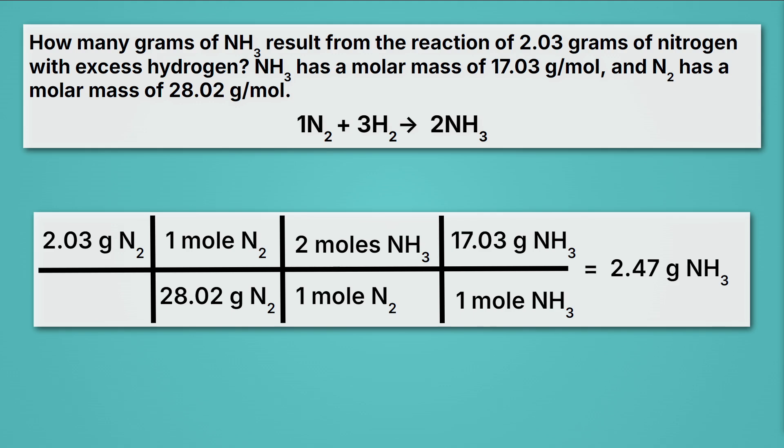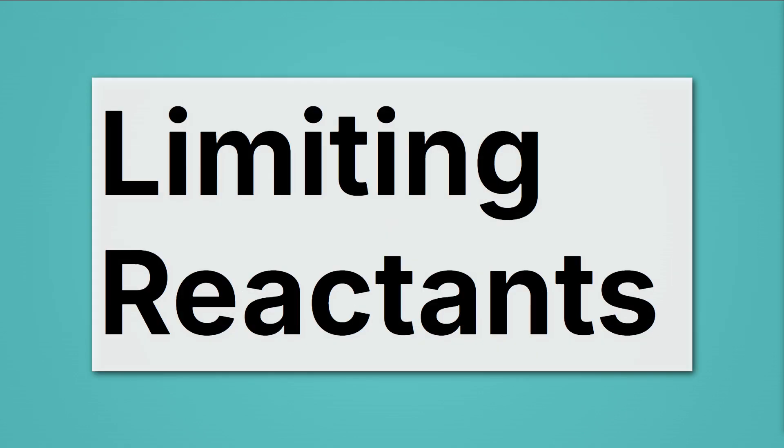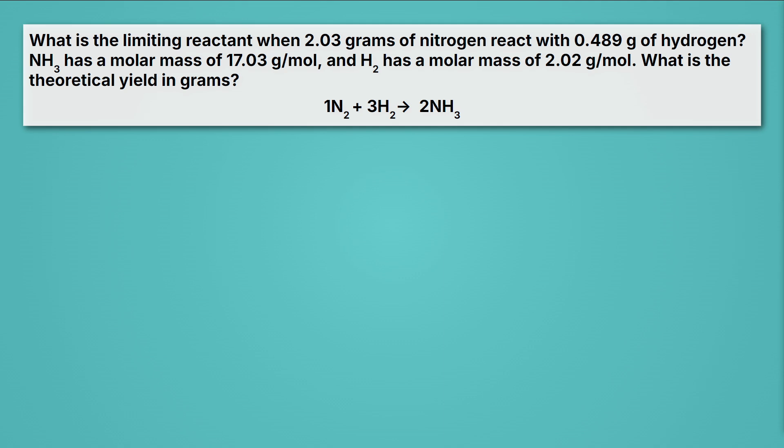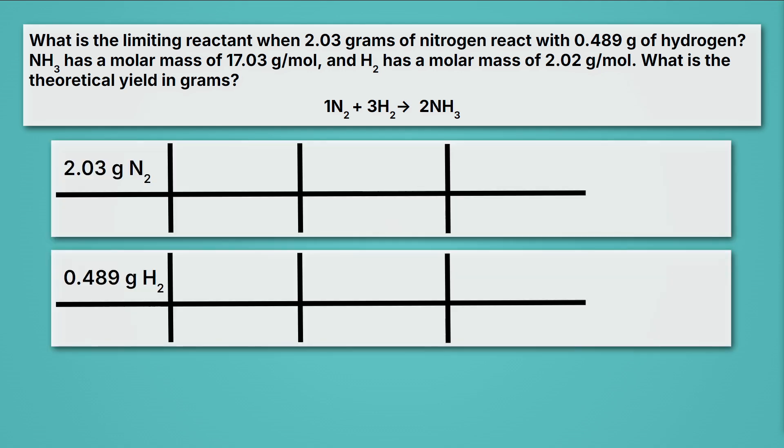So that's a stoichiometry problem where we are given just one of our chemical reactants. Things get a little more complicated when we deal with limiting reactants. Here it says, what is the limiting reactant when 2.03 grams of nitrogen react with 0.489 grams of hydrogen? It also tells us the molar mass of NH3 and of H2. And lastly says, what is the theoretical yield in grams? This problem is more complicated because we're given information about both nitrogen and hydrogen. So we'll need to set up two train tracks of conversion. One will start with our nitrogen, and one will start with our hydrogen.